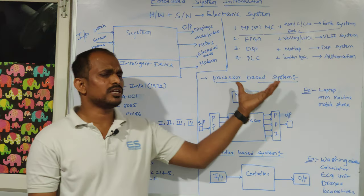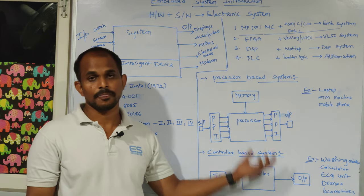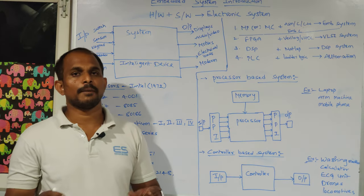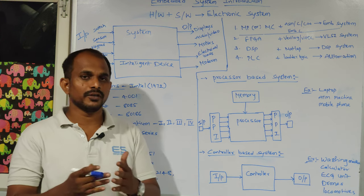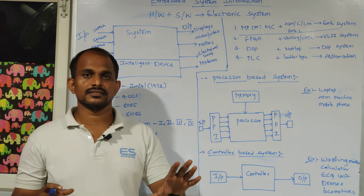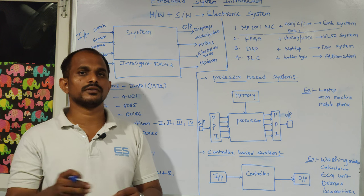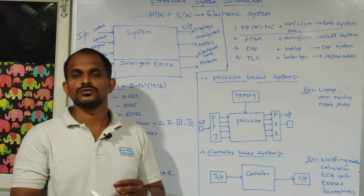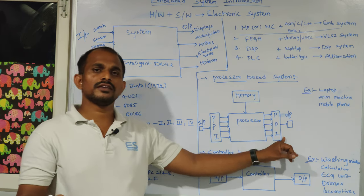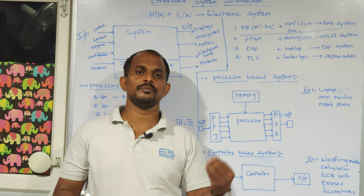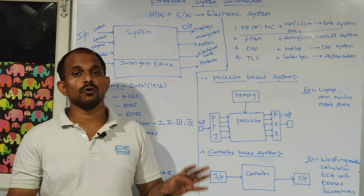There are currently no 64-bit controllers; the market is still on 32-bit. Now, let's see what a processor-based system is. Take the example of a laptop: it contains a screen and keypad, and inside the motherboard you find an external hard disk storing the operating system. Around the processor, there are many chipsets — audio, video, graphics, Ethernet, mouse, keyboard — because the processor cannot directly connect input/output devices.